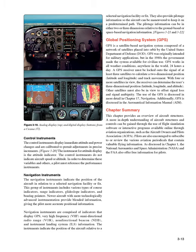Global Positioning System. GPS is a satellite-based navigation system composed of a network of satellites placed into orbit by the United States Department of Defense, DOD. GPS was originally intended for military applications, but in the 1980s the government made the system available for civilian use. GPS works in all weather conditions, anywhere in the world, 24 hours a day. A GPS receiver must be locked onto the signal of at least three satellites to calculate a two-dimensional position — latitude and longitude — and track movement. With four or more satellites in view, the receiver can determine the user's three-dimensional position: latitude, longitude, and altitude.